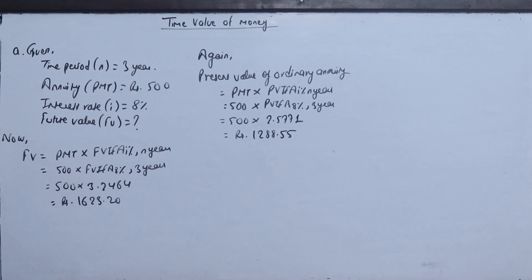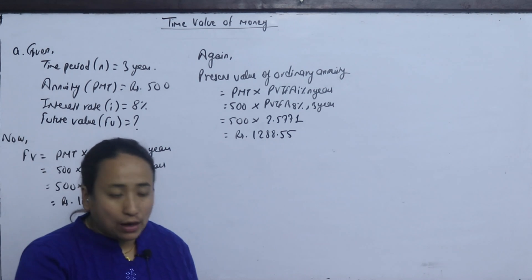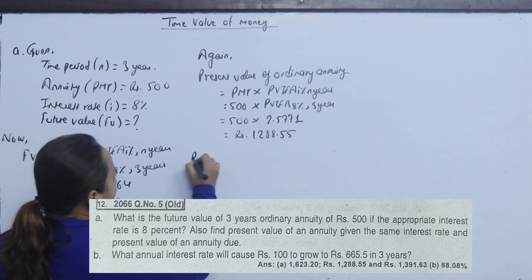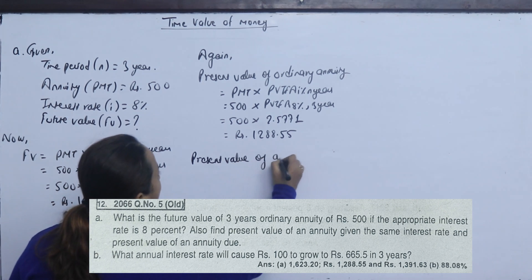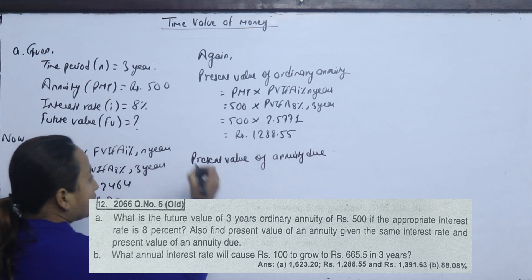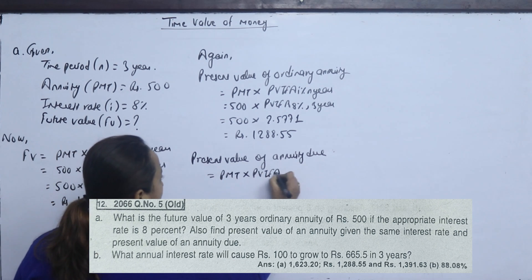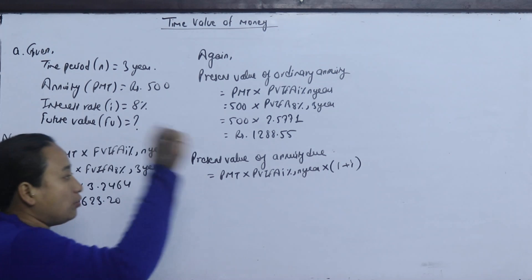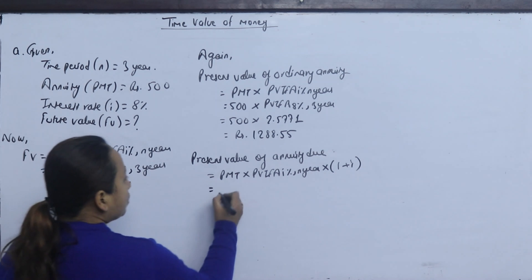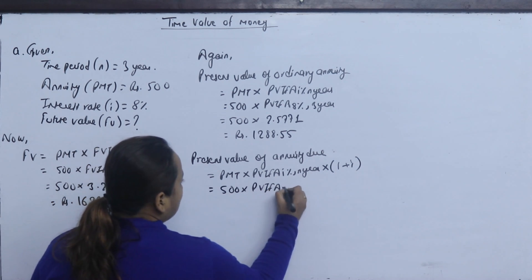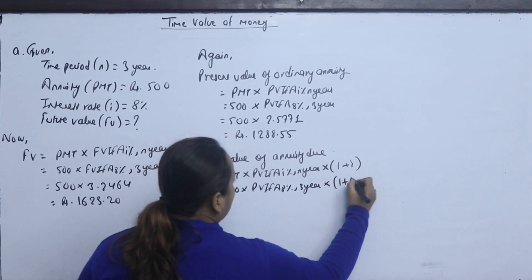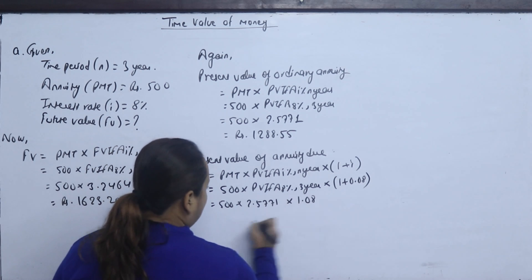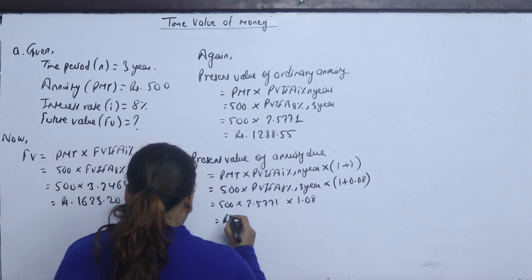This is the ordinary annuity present value. For annuity due, the payment is at the beginning. The formula is the same: Payment × PVIFA (i%, n years) × (1 + i). So: 500 × 2.5771 × 1.08 = 1,391.63.